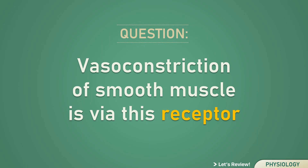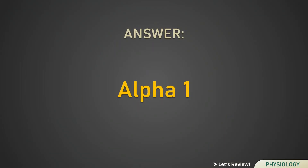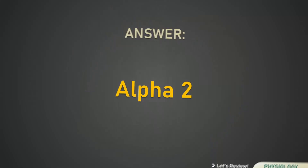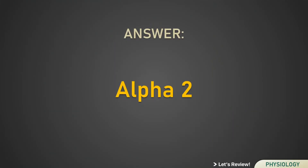Vasoconstriction of smooth muscle is via this receptor: Alpha 1. Inhibition of acetylcholine and insulin release is via this receptor: Alpha 2.